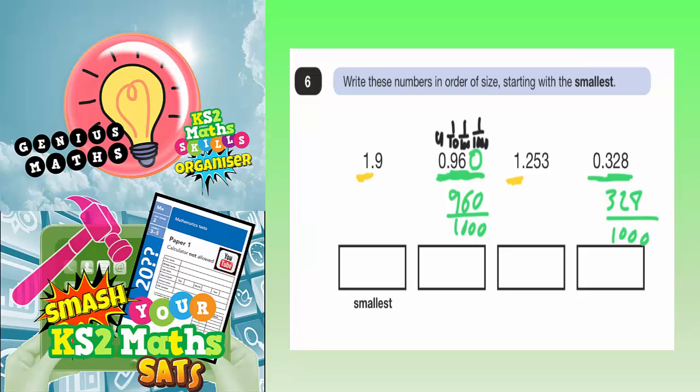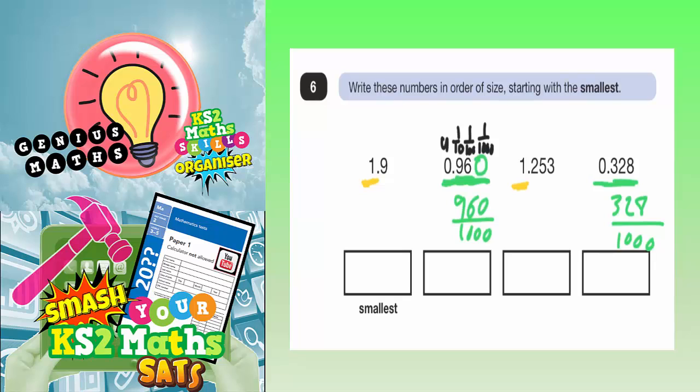So we need to be putting the 0.328 in the smallest box and the 0.96 in the next box. And then we get on to the yellow numbers of underlining yellow.